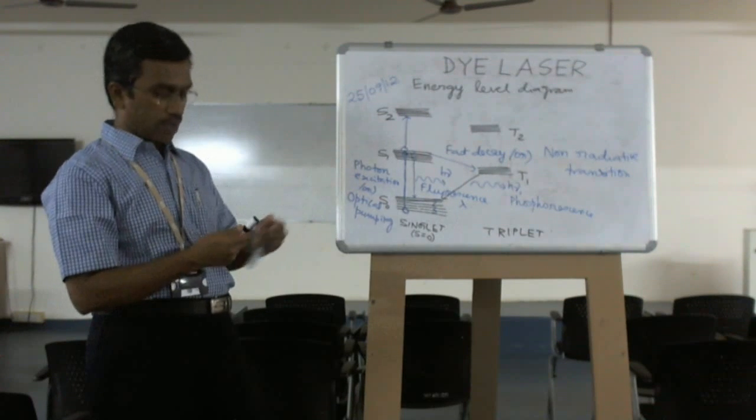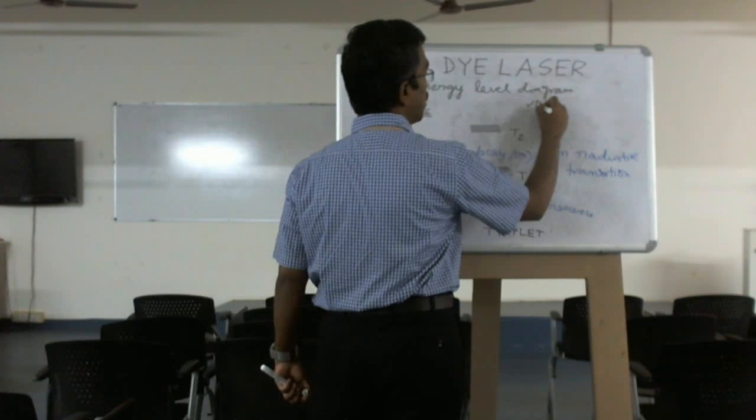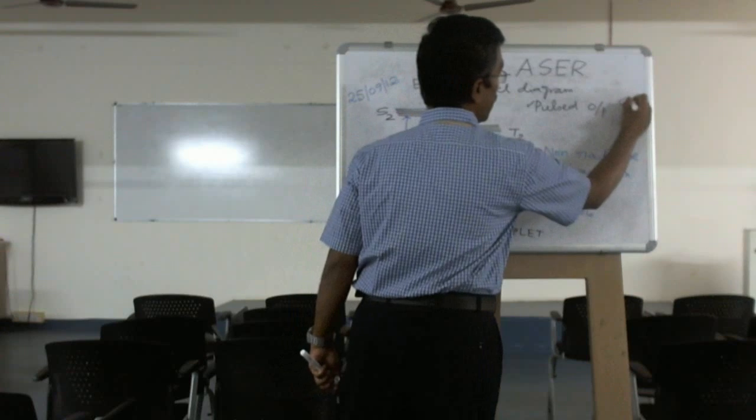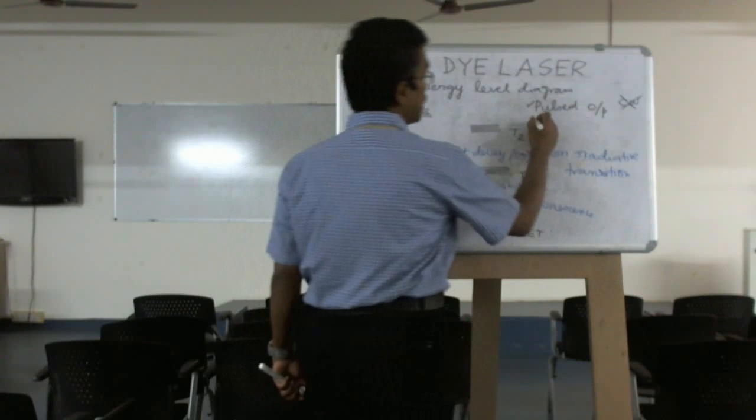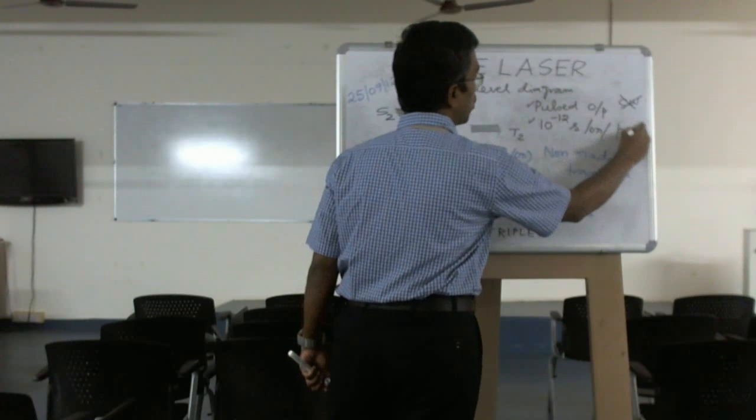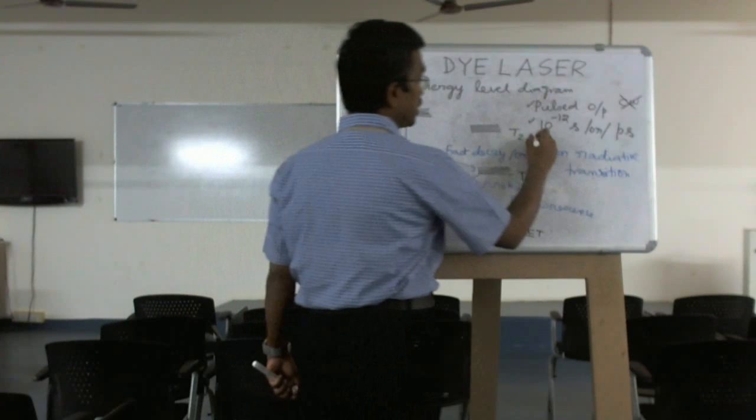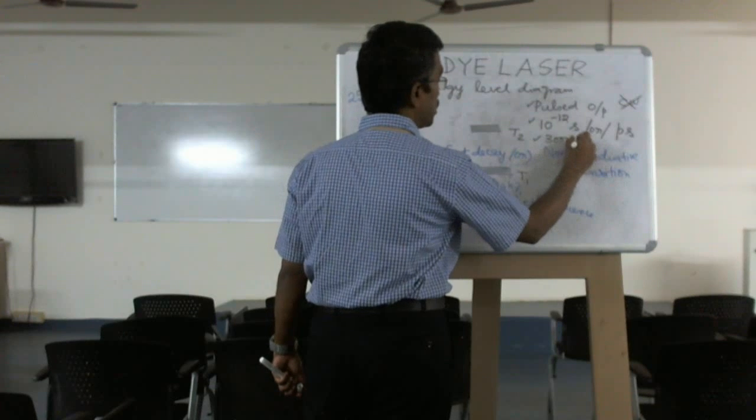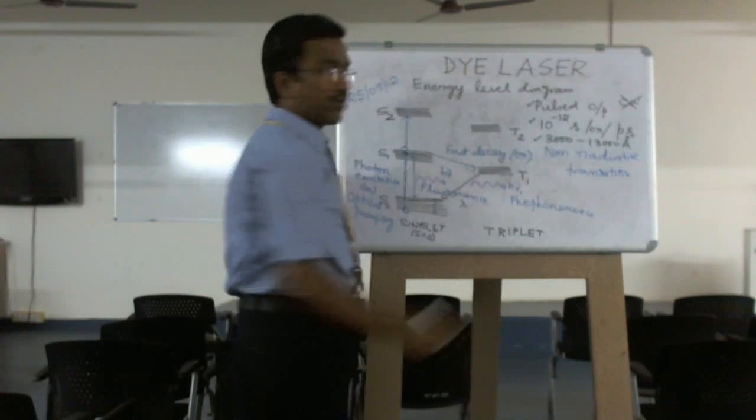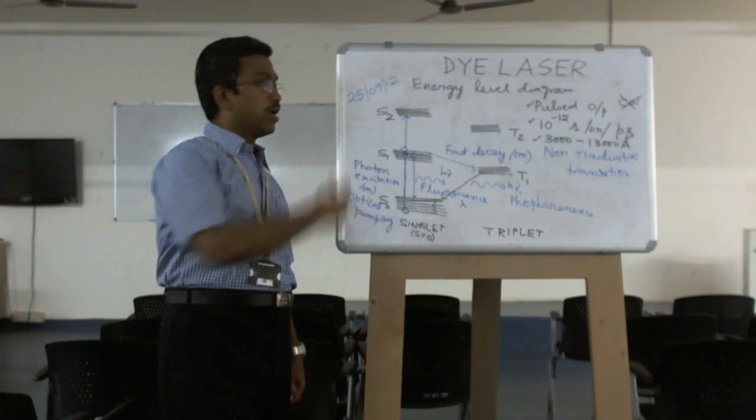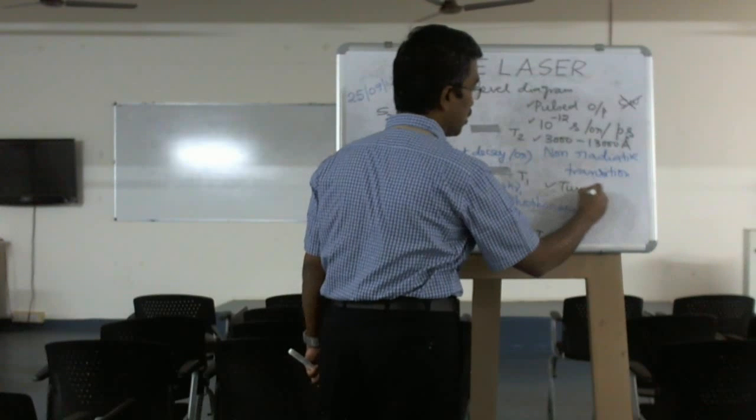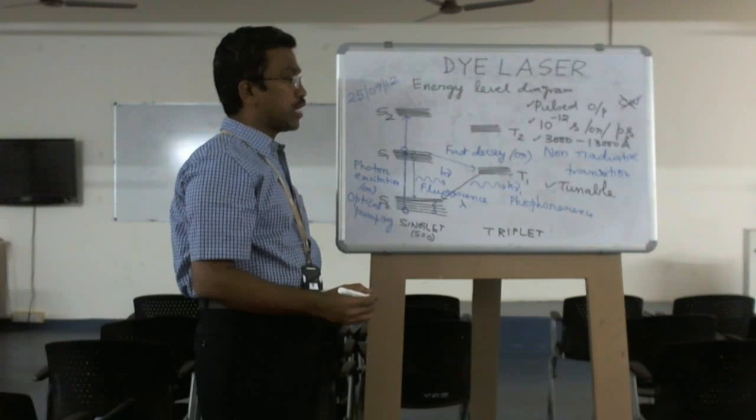From here to here, once again there is spontaneous emission. So dye laser is a four-level laser. You will see the output of the dye laser—it is a pulsed output, not continuous. The pulse duration is 10 to the power of minus 12 seconds or picoseconds. The wavelength range is 3000 to 13000 angstroms. There is visible region; afterwards it can go to ultraviolet also. Whichever light we want, we can tune. Therefore this laser we can call tunable laser.